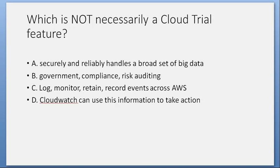Which is not necessarily a CloudTrail feature? A. Securely and reliably handles a broad set of big data. B. Government compliance and risk auditing. C. Log, monitor, retain, record events across AWS. D. CloudWatch can use this information to take action. Answer: A. Securely and reliably handles a broad set of big data.